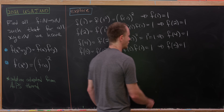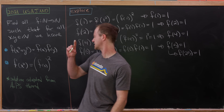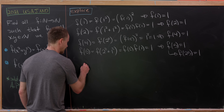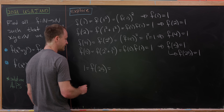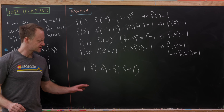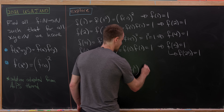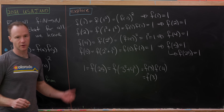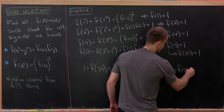Notice that f(5) = 1 quickly tells us f(25) = 1 using the second functional equation. Now we have enough to compute f(3): f(25) = f(3² + 4²) = f(3)·f(4) = f(3)·1 = f(3). Since f(25) = 1, reading left to right we get f(3) = 1.